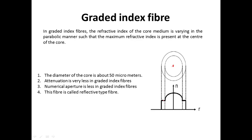The refractive index of the cladding is uniform throughout. The diameter of the core is about 50 micrometers for the graded index fiber. The attenuation, that is the loss of energy, is very less in this fiber. The numerical aperture is less in graded index fiber, and this fiber is also called a refractive type fiber.